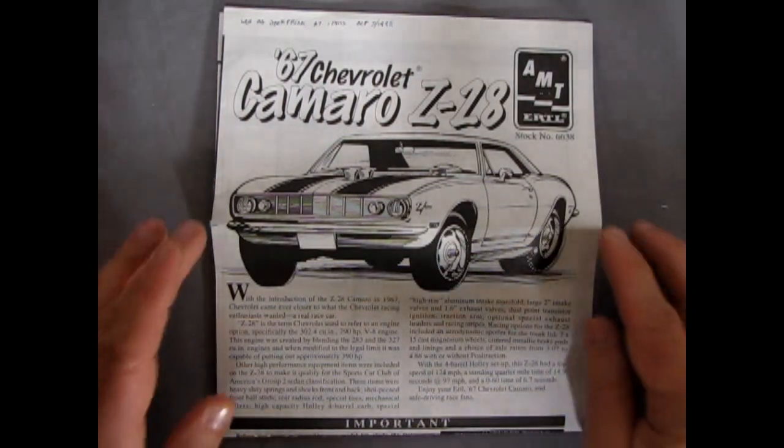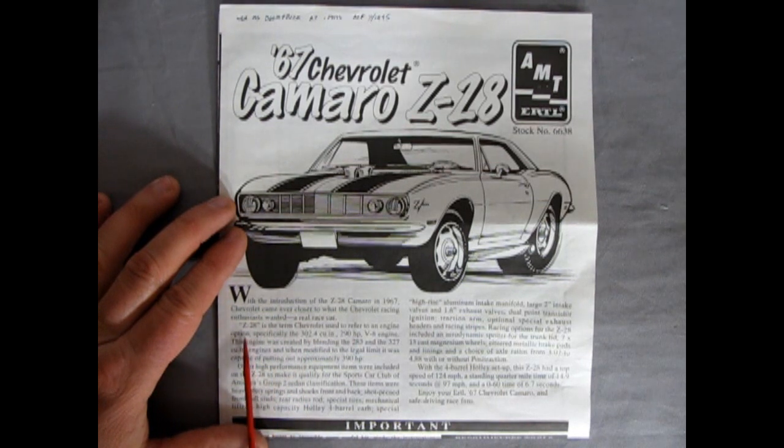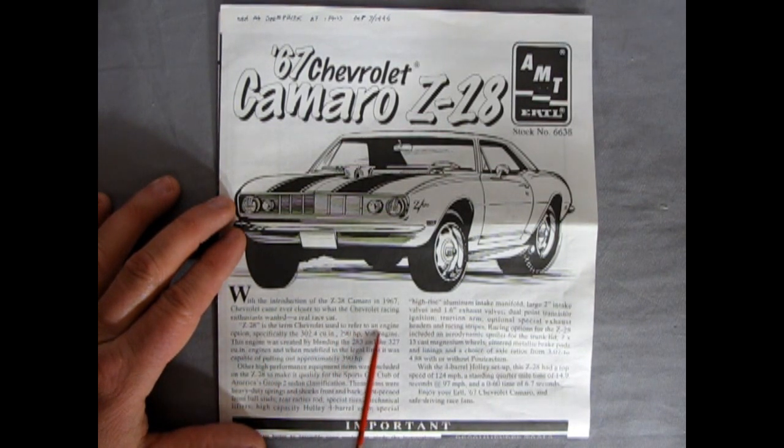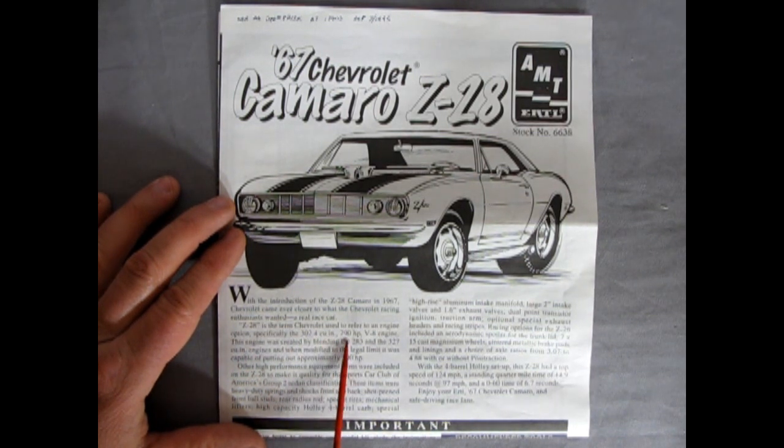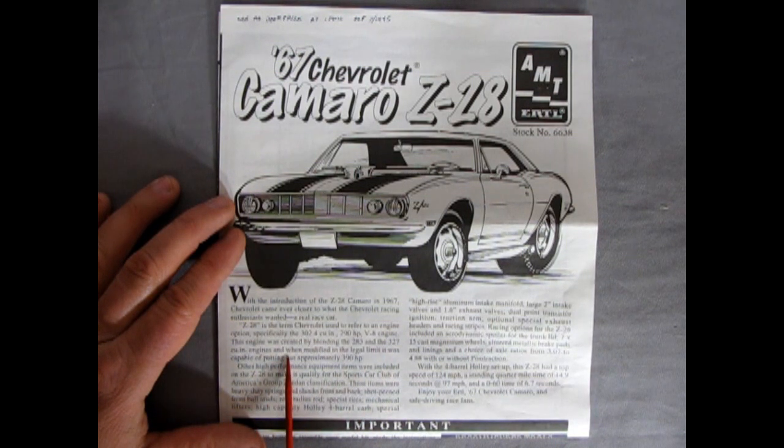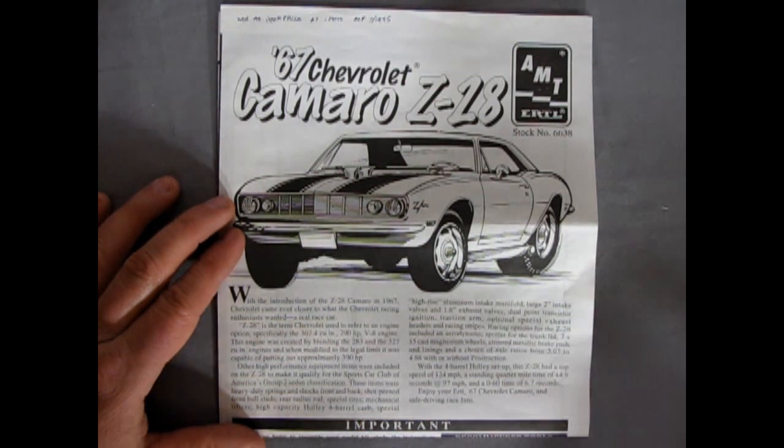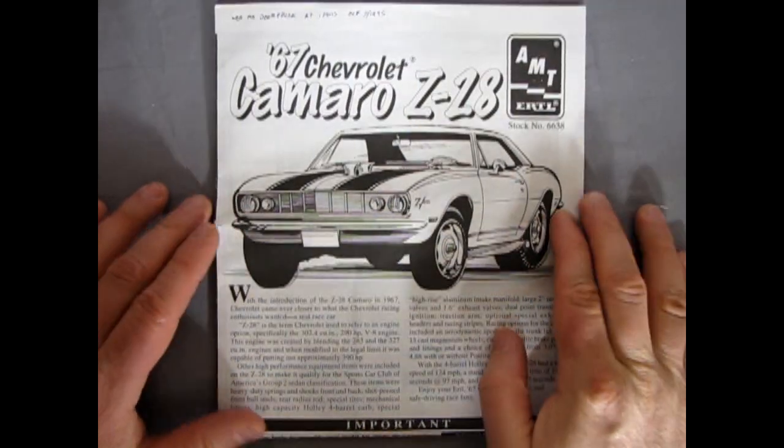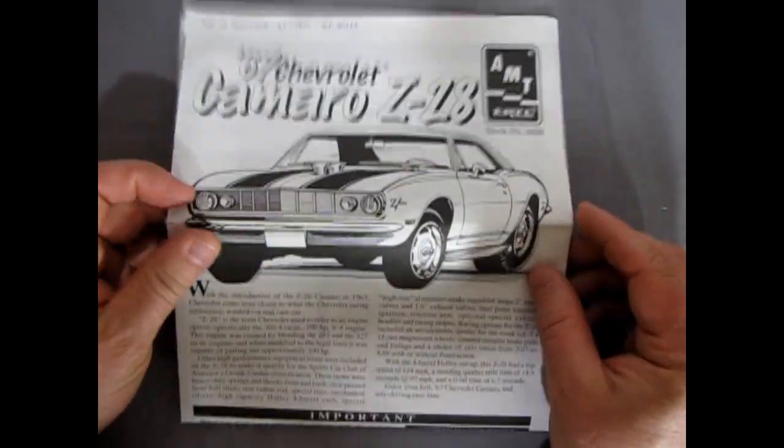And here we have our instruction sheet for our 67 Camaro Z28 and of course with all our write-up down here. Z28 is the term Chevrolet used to refer to an engine option, specifically the 302.4 cubic inch 290 horsepower V8 engine. The engine was created by blending the 283 and the 327 cubic inch engines and when modified to the legal limit it was capable of putting out approximately 390 horsepower. Very cool. Very Camaro.